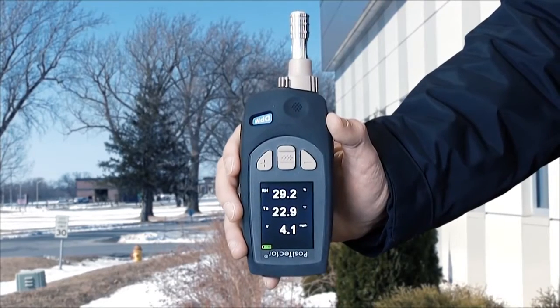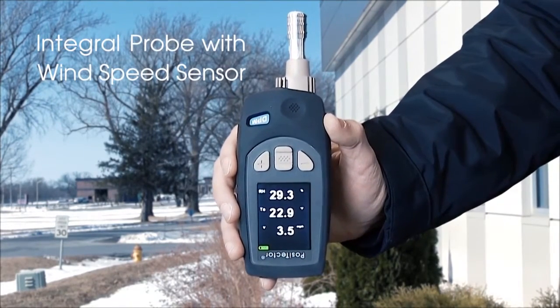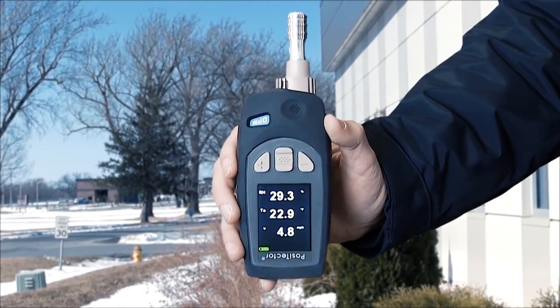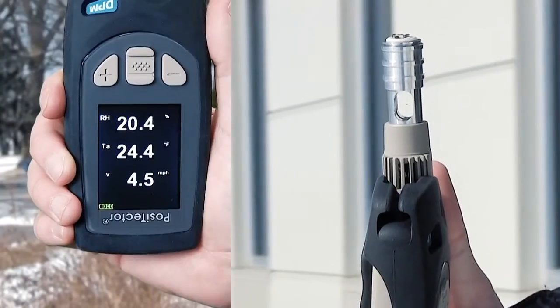The Positector DPM integral probe with wind speed sensor includes the same sensors as the DPM integral probe in addition to a wind speed sensor. Using precision hotwire anemometer technology, airspeed is measured accurately in a variety of units with no moving parts.